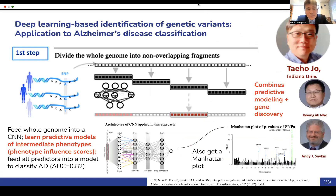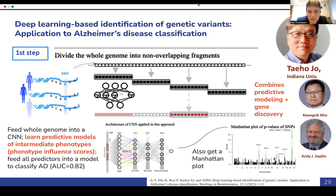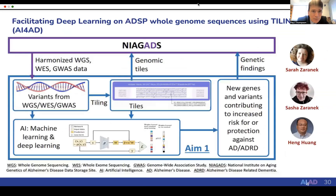Now moving on to the genome: the second half of the talk has to do with AI for genomic data and for combining genomic and imaging data. Work by Quang Sik Noh, working with Taiho Zhou and Andy Sakin in Indiana, adapts the convolutional neural network model to sequences. The whole genome can be divided into fragments and read, much like patches in an image, into an aggregate deep learning method that tries to predict Alzheimer's disease from multiple variants observed in the genome, both discovering relevant genes and learning predictive models of AD and intermediate phenotypes.